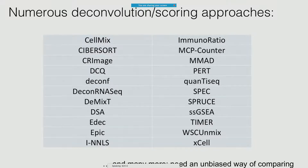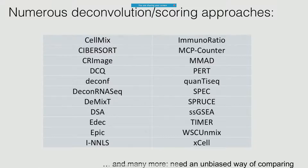Of course, you can do that with a bunch of other methods, not just CIBERSORTx — there are at least 20 different methods out there in the literature, in fact many more. What's really been missing is a framework for comparing these in an unbiased way, and that's exactly what a DREAM challenge is aimed at doing.